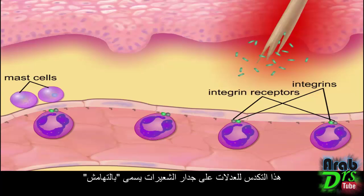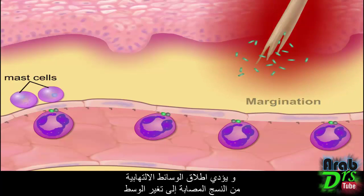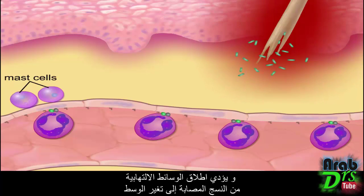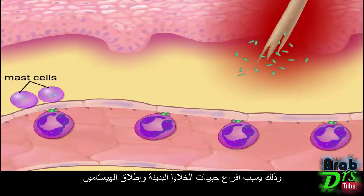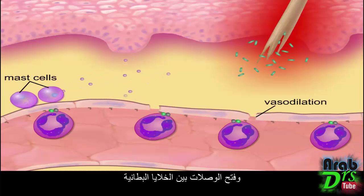This accumulation of neutrophils along the walls of the capillary is referred to as margination. The inflammatory mediators released by the injured tissue bring about changes that cause mast cells to degranulate and release histamine. Histamine causes vasodilation and an opening of the junctions between the endothelial cells.